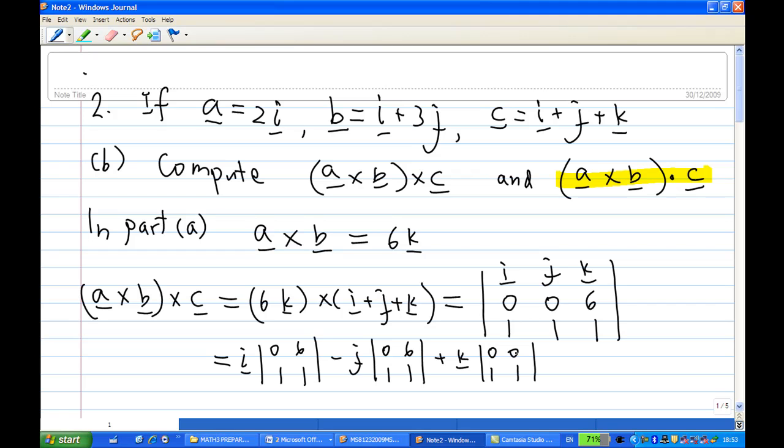In any case, this is equal to determinant of 0, 6, 1, 1 will give you minus 6. So this is minus 6i and the second one will be minus minus 6j become plus 6j. So this will give you a cross b cross c.